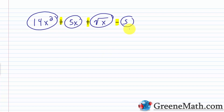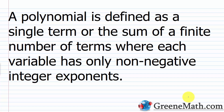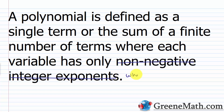The simplest type of algebraic expression we're going to come across is known as a polynomial. A polynomial is defined as a single term or the sum of a finite number of terms, where each variable has only non-negative integer exponents — which really means whole number exponents. So when you're asked if something is a polynomial, look at the variables and check for whole number exponents.